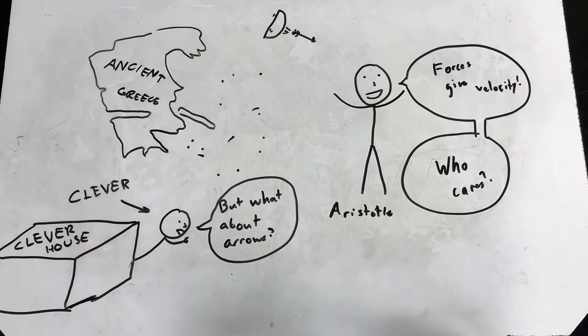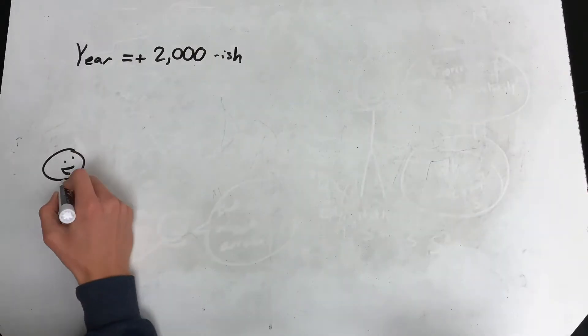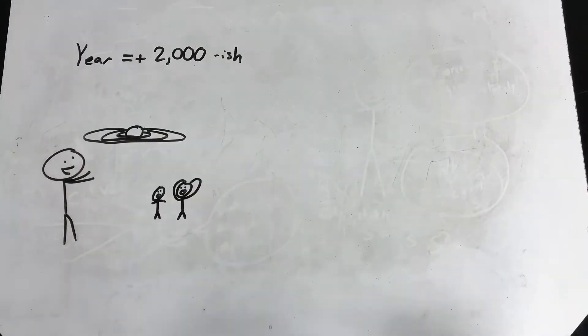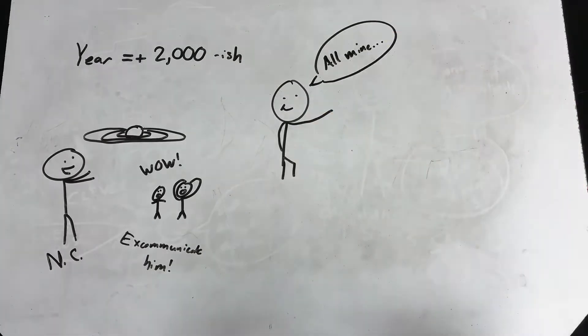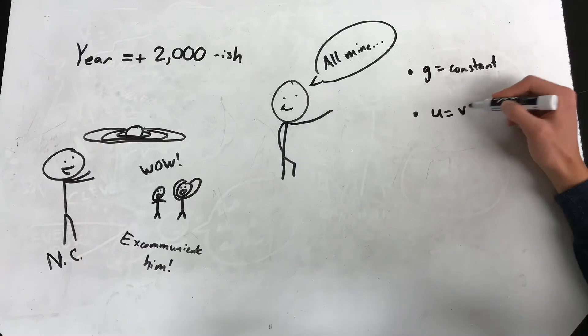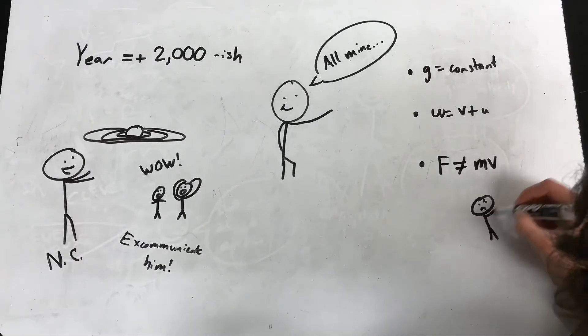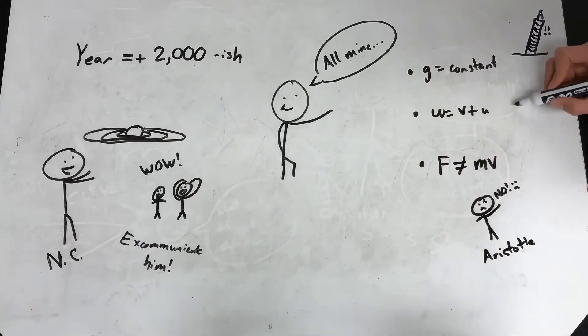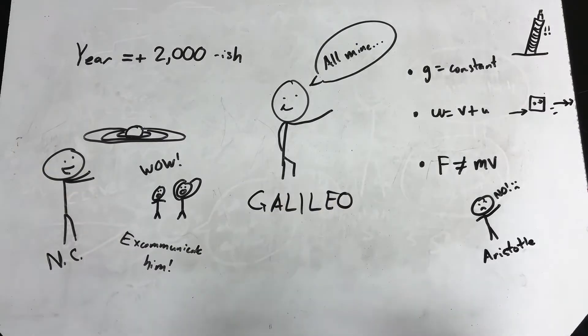Fast forward almost two millennia to the scientific revolution, when Nicholas Copernicus is proposing the heliocentric model of the universe. Meanwhile, Galileo Galilei is absolutely destroying Aristotle in terms of science. He discovers a bunch of stuff like the constant acceleration of gravity and the law of classical relativity, but we're interested in something else, a thought experiment.